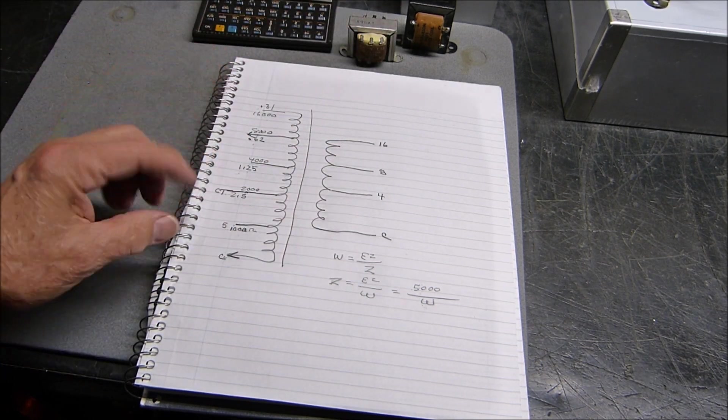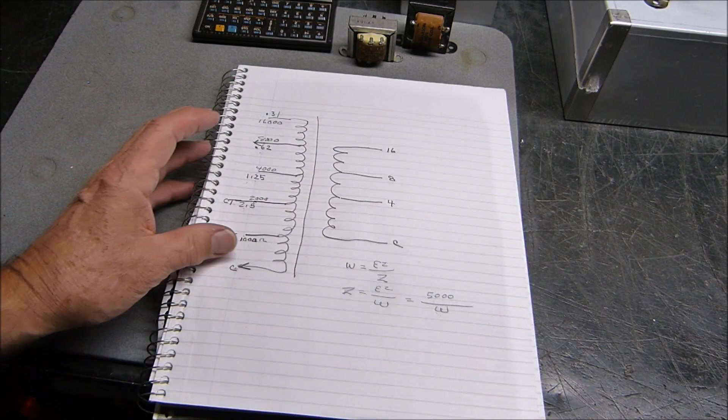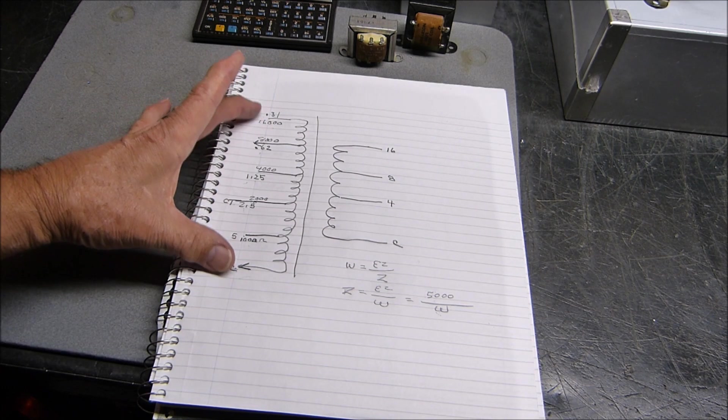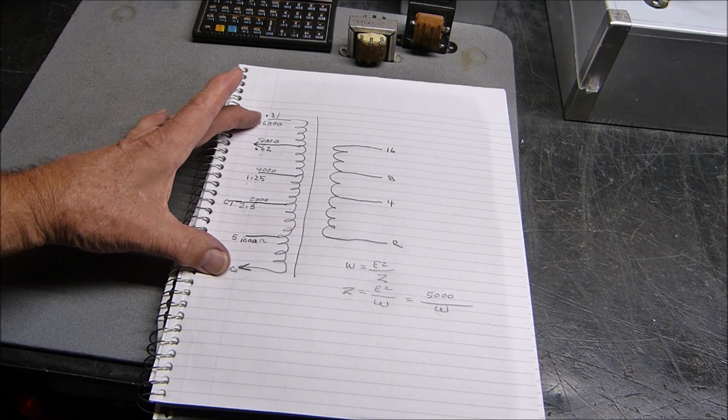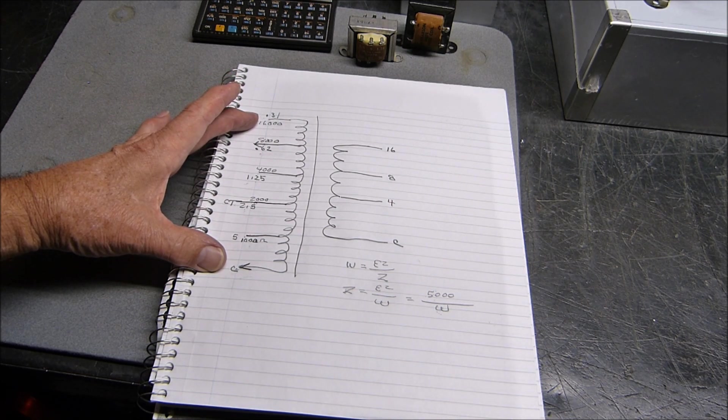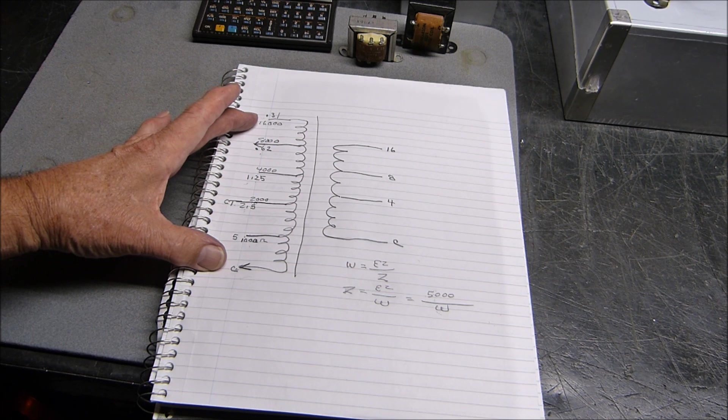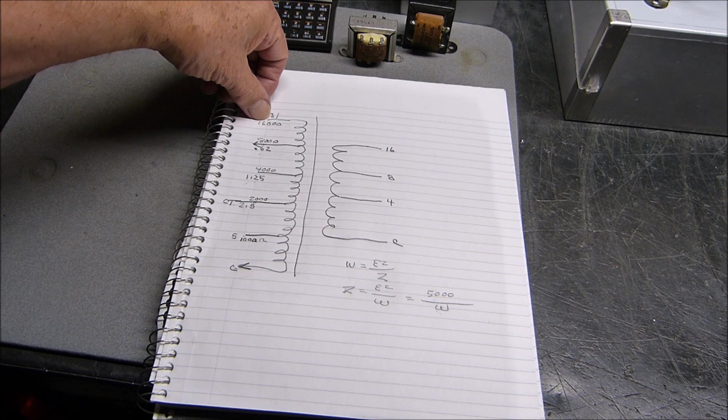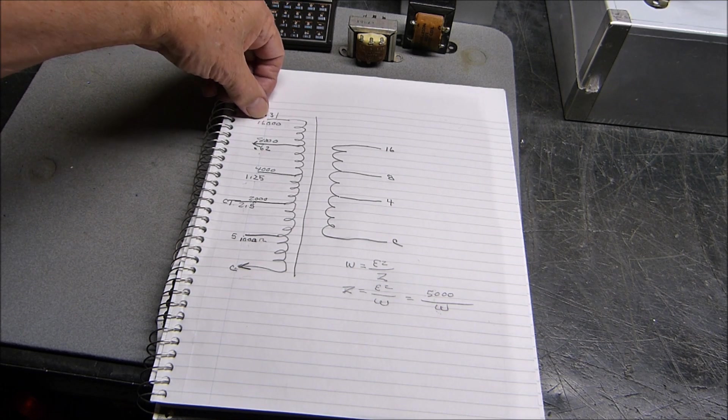If we put a signal from common to 16,000 ohms, do we have a center tap? The answer is yes, we do. The center tap, you remember that impedance is the turns ratio squared. If you take this and take one fourth of it, divide it by four, you'll get 4,000. So the center tap is right there.